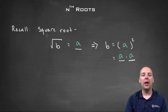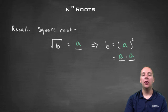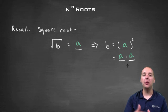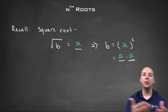If you had a third root, a fourth root, or a fifth root, you're going to be looking for a number multiplied by itself — not with two factors, but maybe with three factors, four factors, or five factors that would give you b.